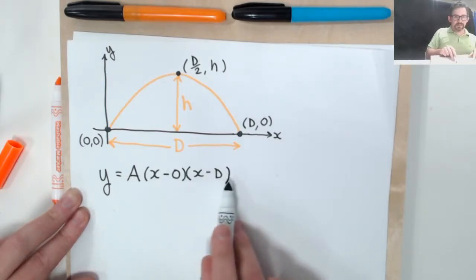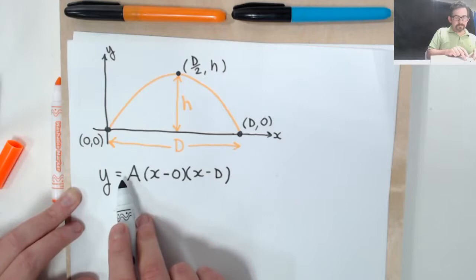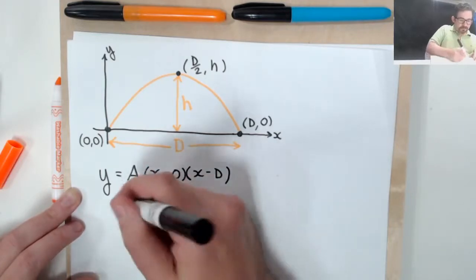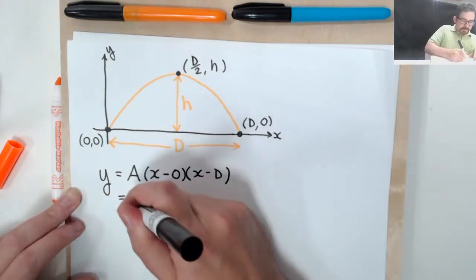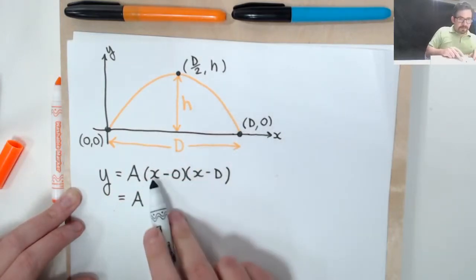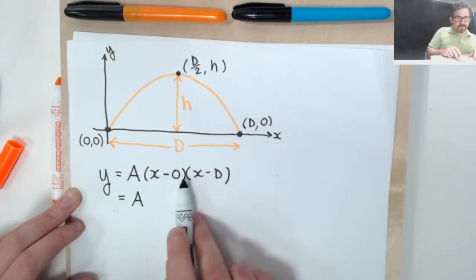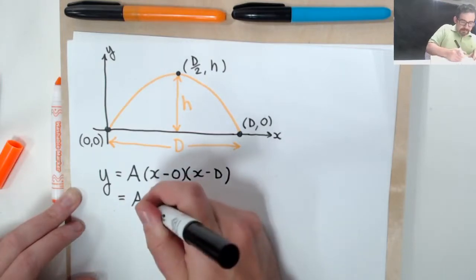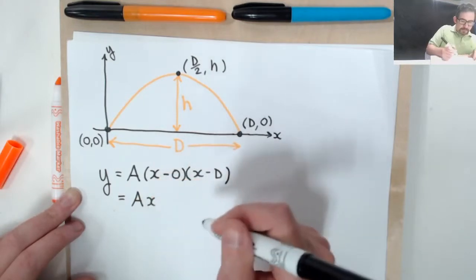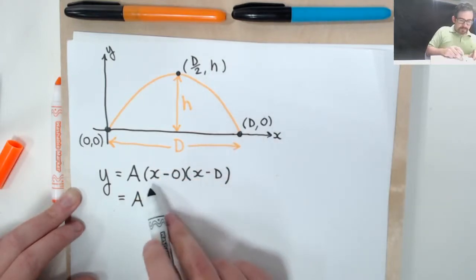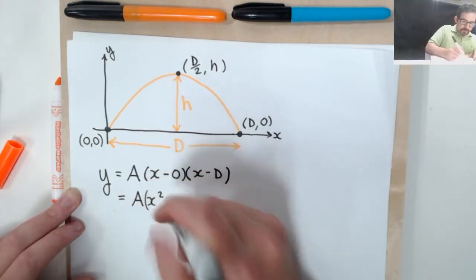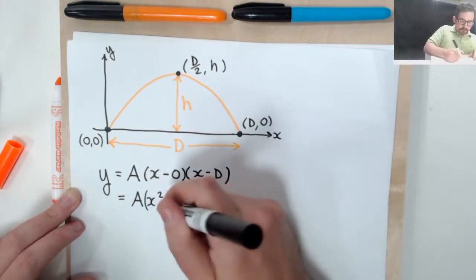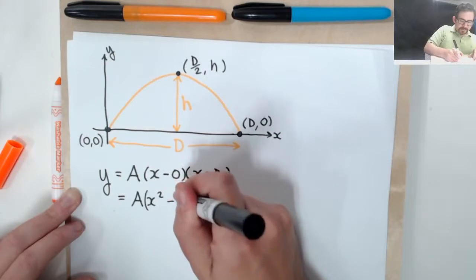So we could simplify that, get rid of at least some of those parentheses. I know this is going to look like a times x minus zero. In my book, that's just called x. So let's say a times x times x minus d. Can we distribute that? x times x gives me an x squared. And x times minus d gives me a minus xd.